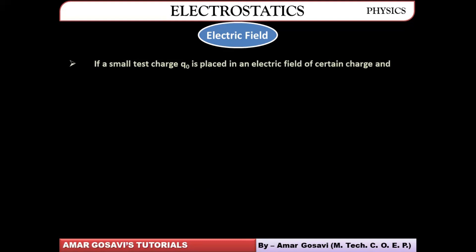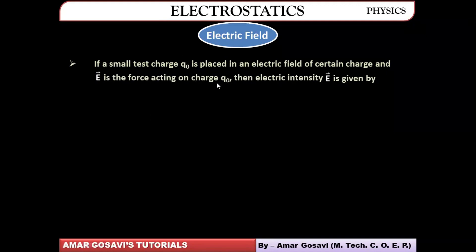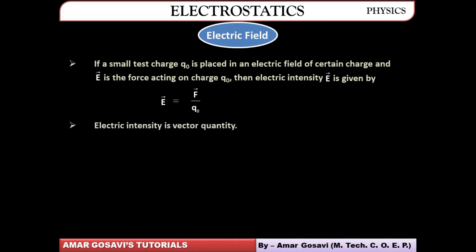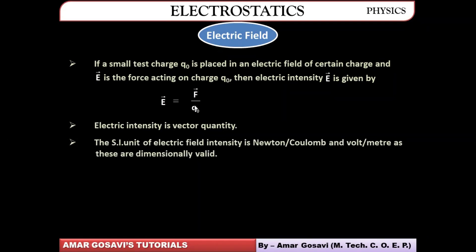If a small test charge q₀ is placed in the electric field, electric intensity E is the force acting on this test charge. Electric intensity is given by the equation: E-bar equals F-bar divided by q₀. It is a vector quantity because force is a vector quantity. Therefore electric intensity is also a vector quantity. Its unit is newton per coulomb or volt per meter.